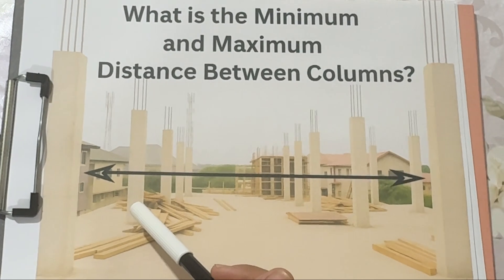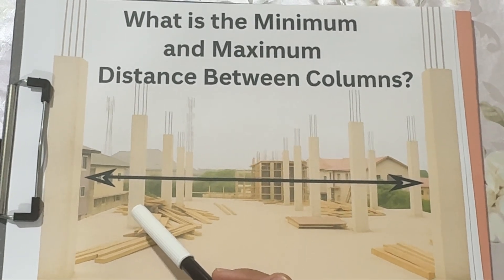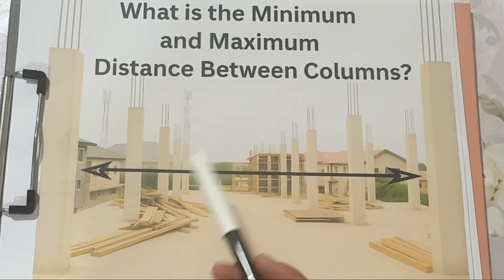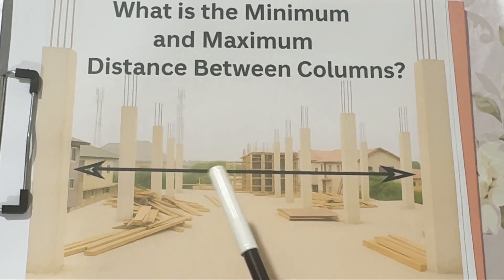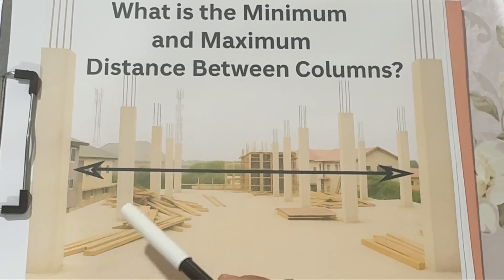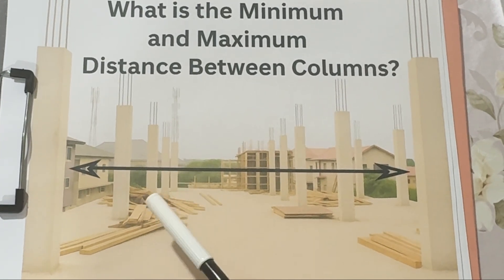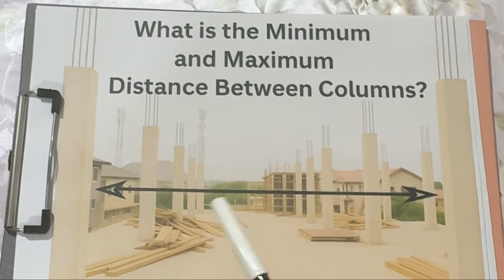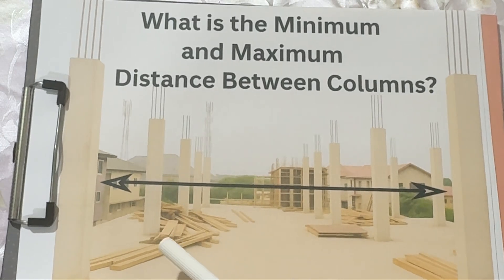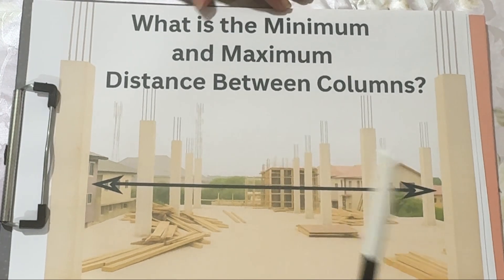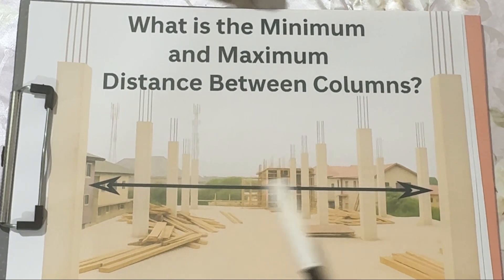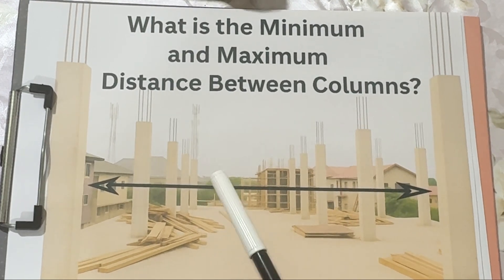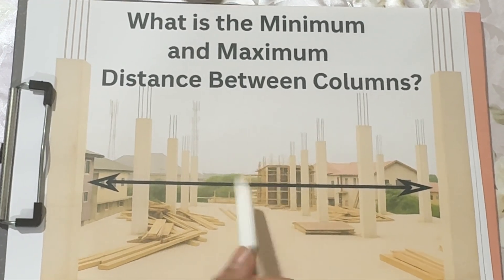Number two: architectural layout. The building's design and room size also play a huge role — you don't want a column right in the middle of your living room. Number three: function of the building. A house or parking area might need wide open space, meaning the columns are spaced further apart. Number four: type of materials. Reinforced concrete, steel, or composite materials each allow different spans because of their strength and stiffness.